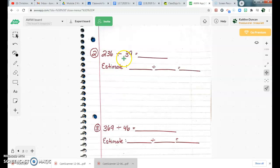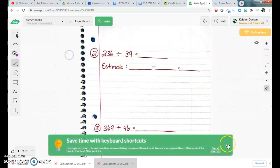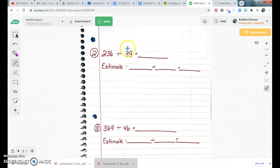Starting off with 236 divided by 39, I'm going to go ahead and estimate first by rounding my divisor to the nearest 10. So I'm going to round that to 40. I know that 4 can go into 4, 8, 12, 16, 24, 28, 32.